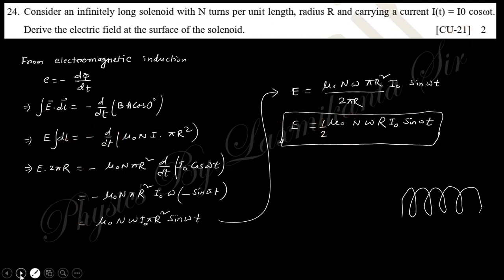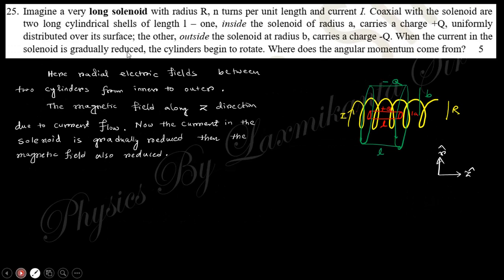Next: Consider a uniform infinitely long solenoid of n turns per unit length carrying current. From electromagnetic induction, this is the formula. E dot dL gives the electric field. This is a Calcutta Technology 2021 question we already discussed in this series.